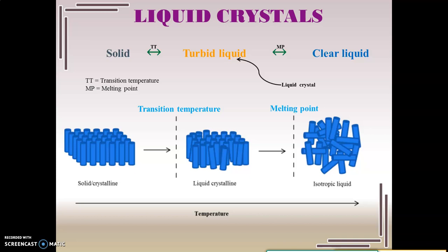For example, if you take an ice cube and provide heat energy to it, it will turn into a transparent liquid. So that is a sharp transition from the solid to the liquid state of matter — two independently pure states of matter.